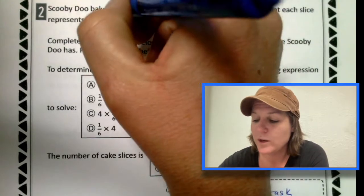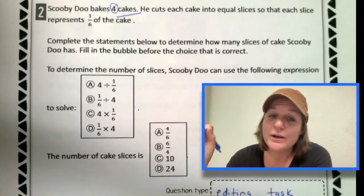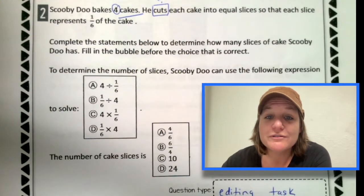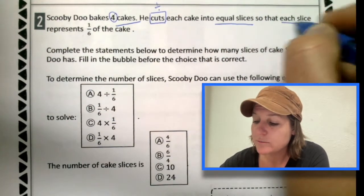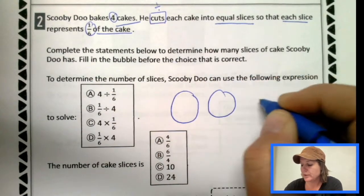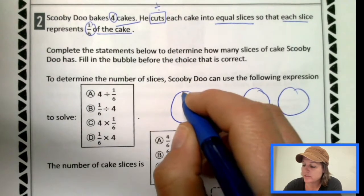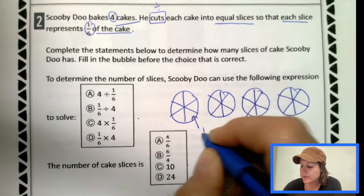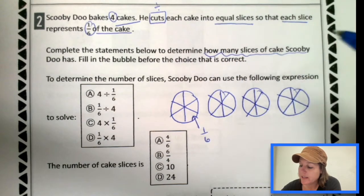Scooby Dooby Doo bakes four cakes. That could be kind of messy because Scooby Doo is very clumsy, kind of like me in the kitchen. Maybe that's why I like Scooby Doo so much. All right. So he bakes four cakes and he cuts, usually cuts means that we're splitting or dividing. He cuts each cake into equal slices so that each slice represents one sixth of the entire cake. I want to draw that out real quick. So he bakes four cakes. One, two, three, four. And then he cuts them into equal slices so that each slice represents one sixth. Kind of like that. And there we go. That way each slice represents one sixth of the cake.